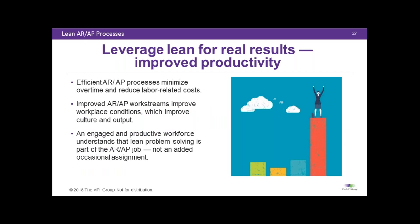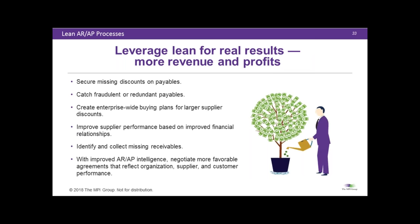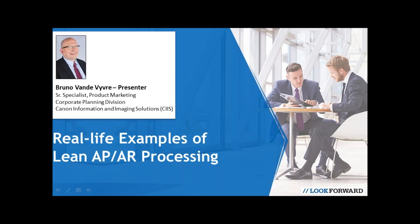What kind of results should you expect? You're trying to take something that's irritating customers and suppliers and turn it into something that adds value. Done right, these processes will minimize overtime, reduce labor costs, improve productivity and speed. You'll be able to capture discounts you've been missing, catch fraud much easier, improve supplier relationships, identify and collect missing receivables, and negotiate better contracts because you'll know what you're spending and where — and how to leverage that with your supply chain. There's a lot of money here.